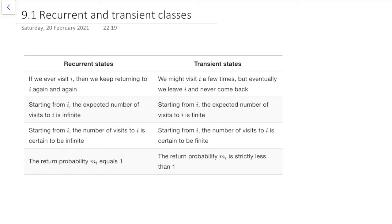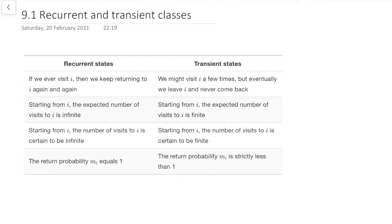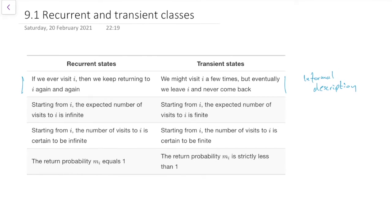Here we can see a table from the notes giving some of the differences between recurrent and transient states. In a recurrent state, if we ever visit i, then we keep returning to i again and again. Whereas in a transient state, we might visit a few times and never come back. That's an informal description — there's not really any maths there.